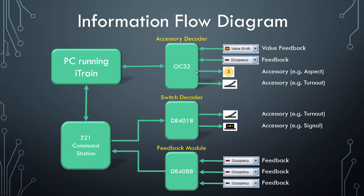That doesn't mean that there isn't other hardware out there that could do the job or do it in a different way. For example, depending on how the aspect has been designed, it may be possible to display the different characters on a route indicator using simple on-off data rather than needing a full 8-bit value, in which case a less sophisticated accessory decoder might work. I'm currently researching that idea to see how viable it is and may present something on it in a future tutorial.